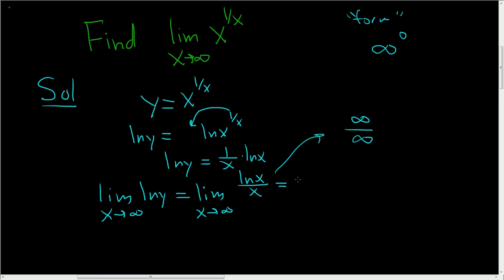Using L'Hopital's, we get the limit as x approaches infinity. The derivative of the natural log of x is 1 over x. We take derivatives, it's L'Hopital's, and the derivative of x is 1. This is the limit as x approaches infinity of 1 over x, which is 0.